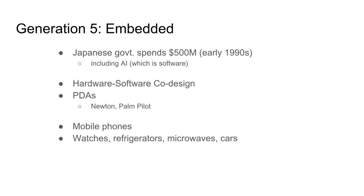Software implementing the function of previous custom circuits was rendered down into binary and flashed directly into hardware, so a product could be shipped that appears to be all hardware and is as fast as a custom circuit, but without the same development times and costs. PDAs were introduced — most notably the Newton and the Palm Pilot — mobile phones began to appear, and suddenly watches, refrigerators, microwaves, and cars all had computers embedded in them and intercommunicating.